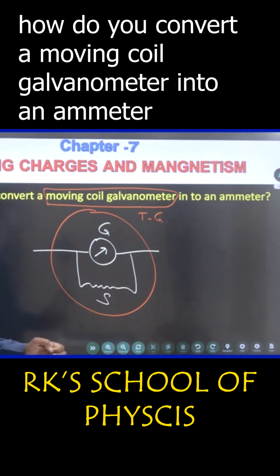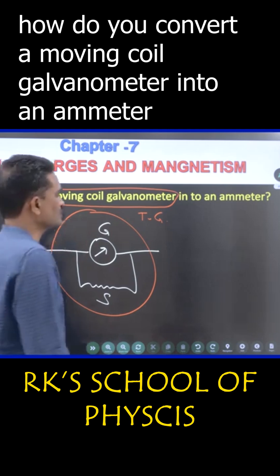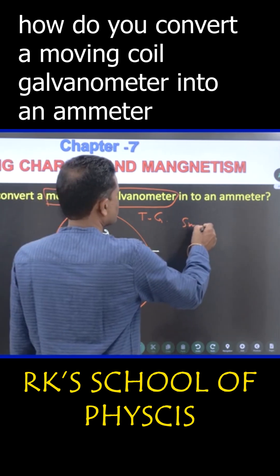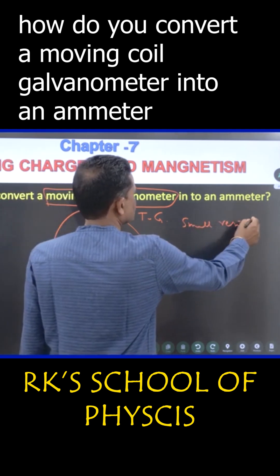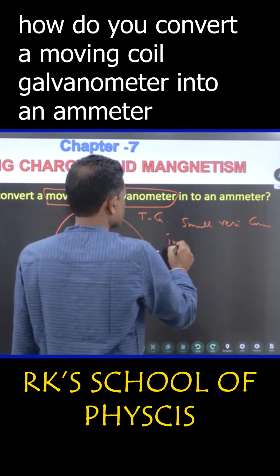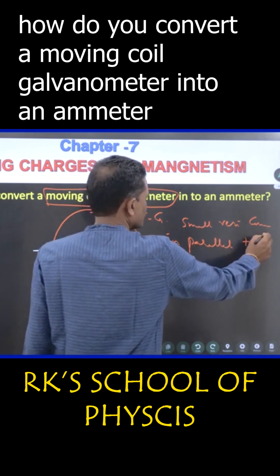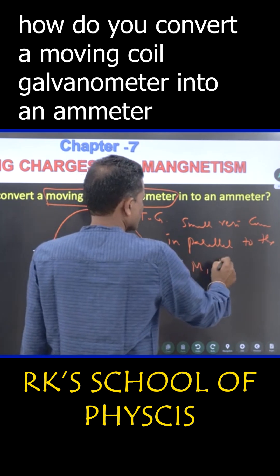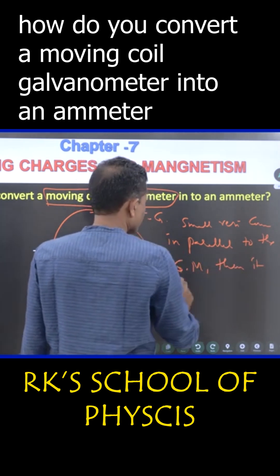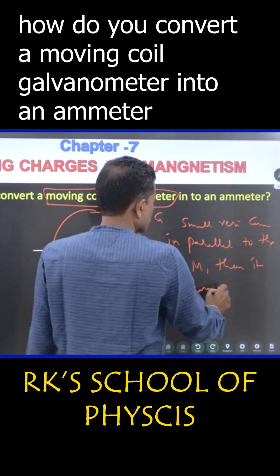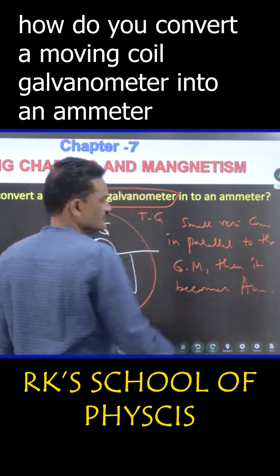When a small resistance is connected in parallel to a galvanometer, it becomes an ammeter. If you want, I can write the answer. Small resistance connected in parallel to the galvanometer - then it becomes an ammeter. That is all.